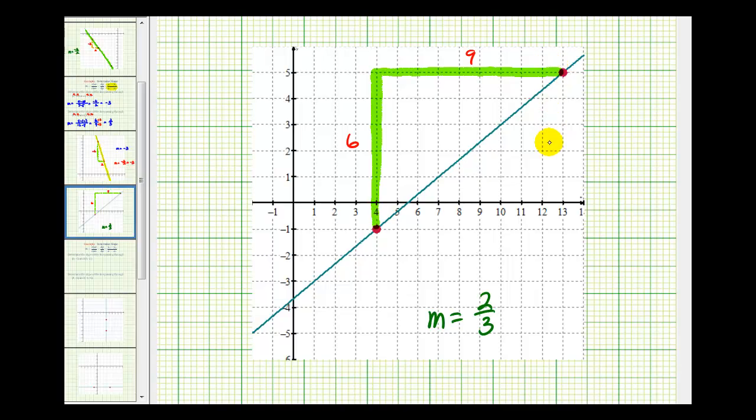The ratio of the vertical change to horizontal change would be 6 ninths, which again does simplify to 2 thirds, which we found as the slope using our formula. And notice how the slope was positive, so as we move along the line from left to right, this line is slanted upward, which is always true if the slope is positive.